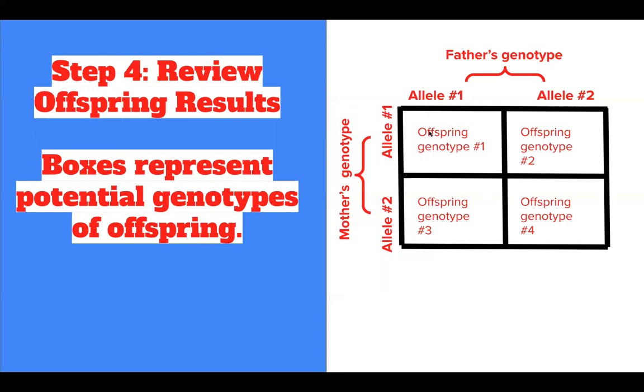These boxes represent the potential genotypes of the offspring that this mother and father could make when they reproduce. We have one potential genotype in the first box, a second potential genotype in this top right box, a third potential genotype in the bottom left, and a fourth potential genotype in the bottom right. It's important to understand that each box represents a different genotype that one offspring could have.